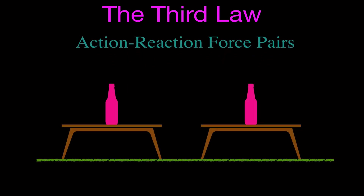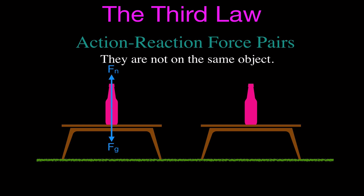On this next slide, I'm going to show you how first not to draw them, and then how to draw them correctly. Here we have a bottle on a table. You might draw the free body diagram for the bottle — the force of gravity pulls down and the normal force from the table pushes up — and think that's the action-reaction pairs. But that breaks one of the rules, because the action-reaction pairs cannot be on the same object. This is just the free body diagram for the object. The free body diagram and the action-reaction pairs are not the same thing.